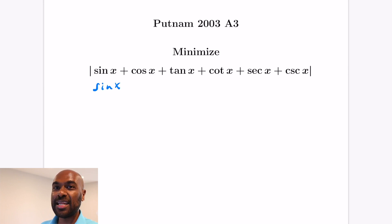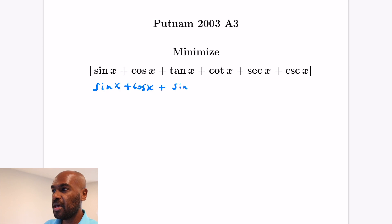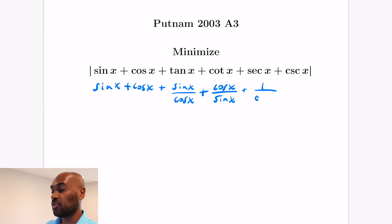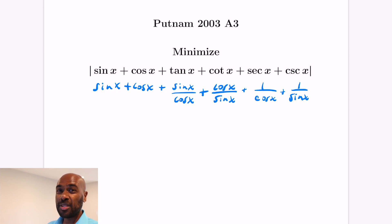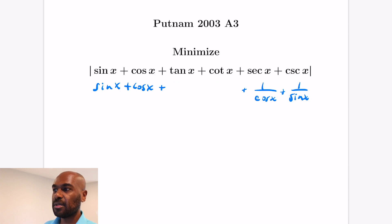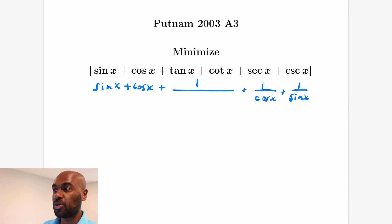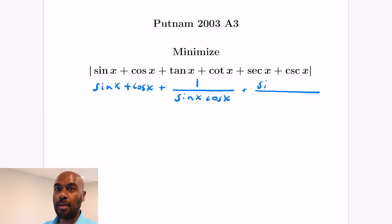The strategy to start is to represent everything in terms of sines and cosines. The first two terms are sin x + cos x. Then we get sin x / cos x + cos x / sin x, and subsequently 1 / cos x + 1 / sin x. The middle two terms with a common denominator give (sin² x + cos² x) / (sin x cos x), and since sin² + cos² = 1, that simplifies to 1 / (sin x cos x). Similarly the last two terms become (sin x + cos x) / (sin x cos x).